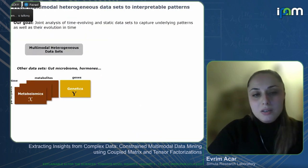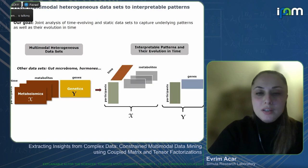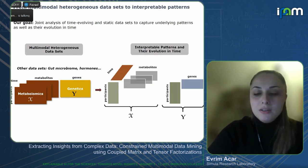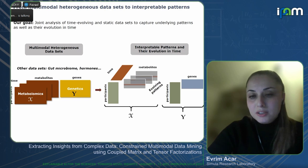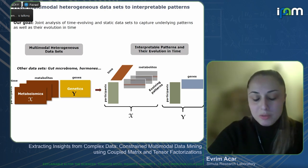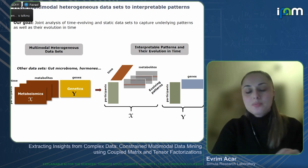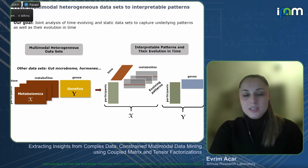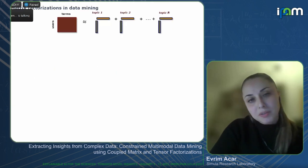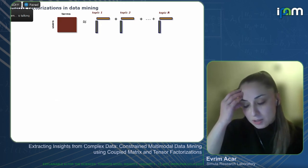Our goal is to jointly analyze dynamic and static data sets, find underlying patterns in an interpretable way, and understand how some of the patterns change in time. There are no such existing models, so we will formulate this and rely on coupled matrix and tensor factorizations. Before discussing coupled models, let's briefly go over matrix factorizations and tensor factorizations.